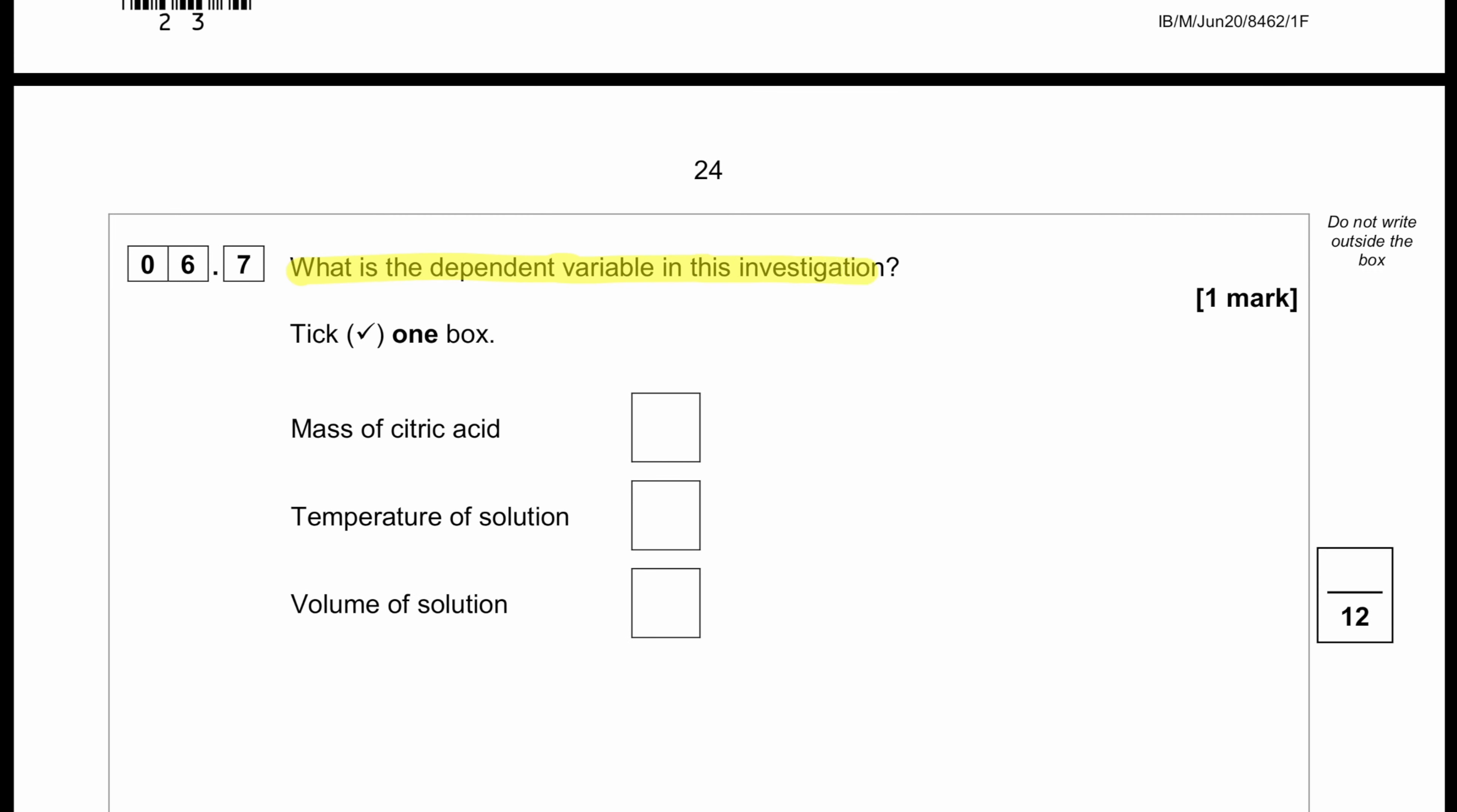What is the dependent variable in this investigation? So definitely dependent variable is the result, in simple words. So in this case, the temperature of the solution is our dependent variable. Mass of the citric acid in this case is independent, and the volume of the solution is a constant variable.